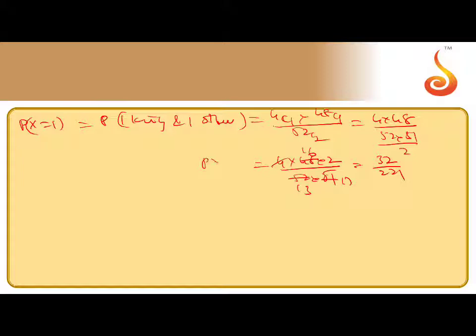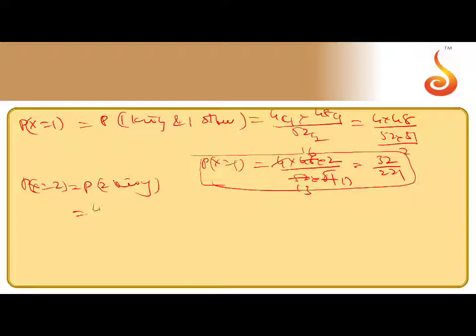Next, P of X equal to 2 kings, that is 2 are kings, that is 4 C2 by 52 C2. So, 4 into 3 by 2, this is 52 into 51 by 2, 2 to cancel. Here after cancellation, 1 by 221 comes.